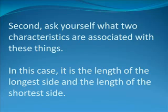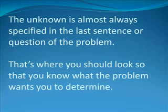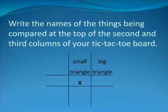Next, ask yourself which of these two things has an unknown characteristic. In this case, we are asked to find the length of the longest side of the smaller triangle. By the way, the unknown is almost always specified in the last sentence or question of any problem. Next, write the names of the things being compared at the top of the second and third columns of your tic-tac-toe board. The second column name should be the name of the object that has an unknown value associated with it, and the third column should be the name of the object for which you were given values for both characteristics.